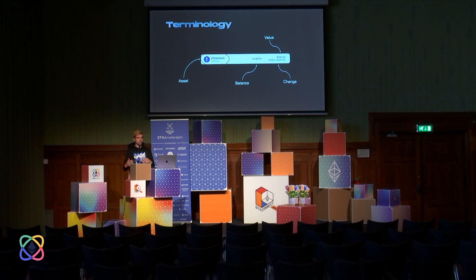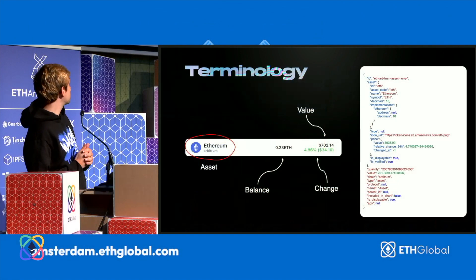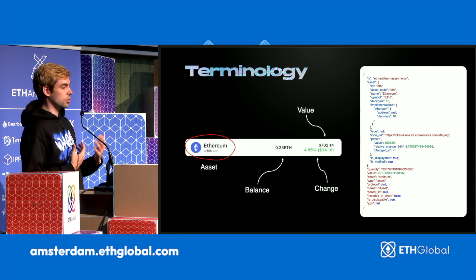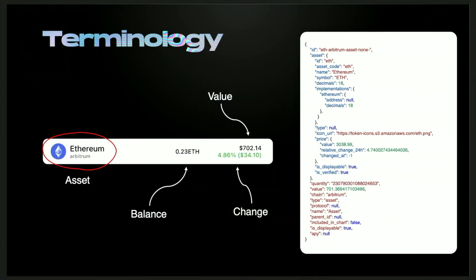A position consists of the asset the user owns, its balance, value available in multiple currencies, and the change in price and value of the asset. Here you can see the data structure for a position. It's available on multiple blockchains, so you can see different implementations. If an asset is available on one chain, you'll also see implementations on other chains. You can see whether it's verified — meaning whether the asset is on multiple token lists — and which protocol the asset belongs to, along with a lot of other data.